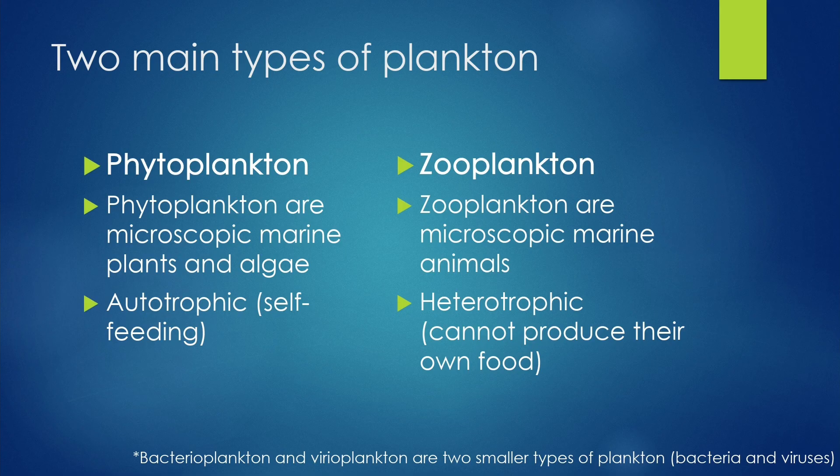On the other hand, zooplankton are heterotrophic. This means they cannot produce their own food and instead it must come from another source, often phytoplankton.